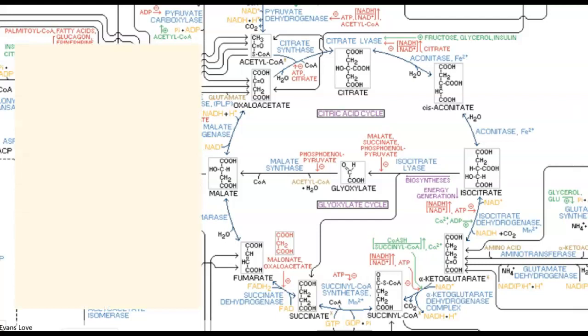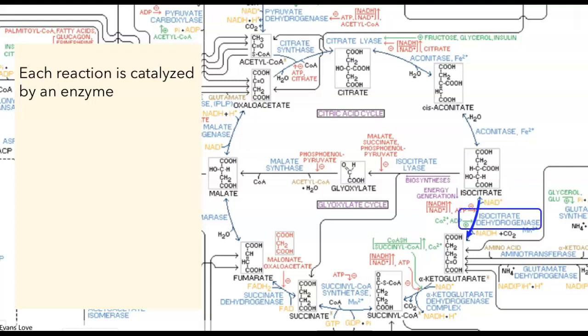There are a few principles to bear in mind. The first is that each one of these reactions is catalyzed by an enzyme. For example, here we have a compound called isocitrate, and that is being converted into another compound called alpha-ketoglutarate. This blue arrow represents the reaction catalyzed by an enzyme — the name of that enzyme is isocitrate dehydrogenase. Every time you see blue text on this figure, it's an enzyme.